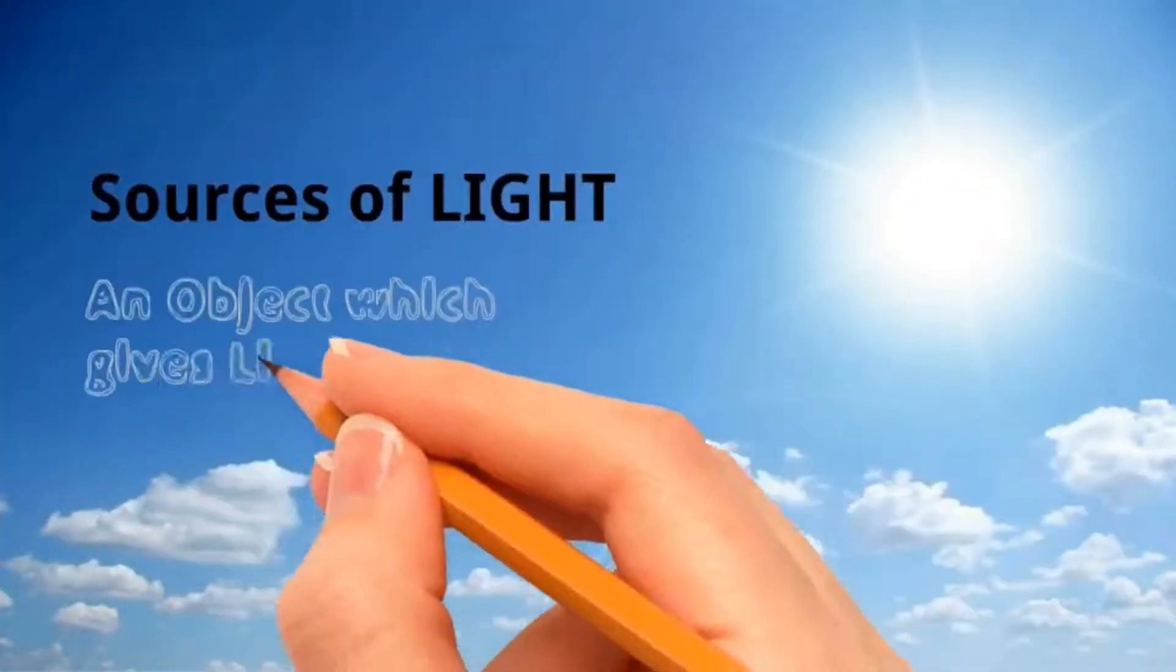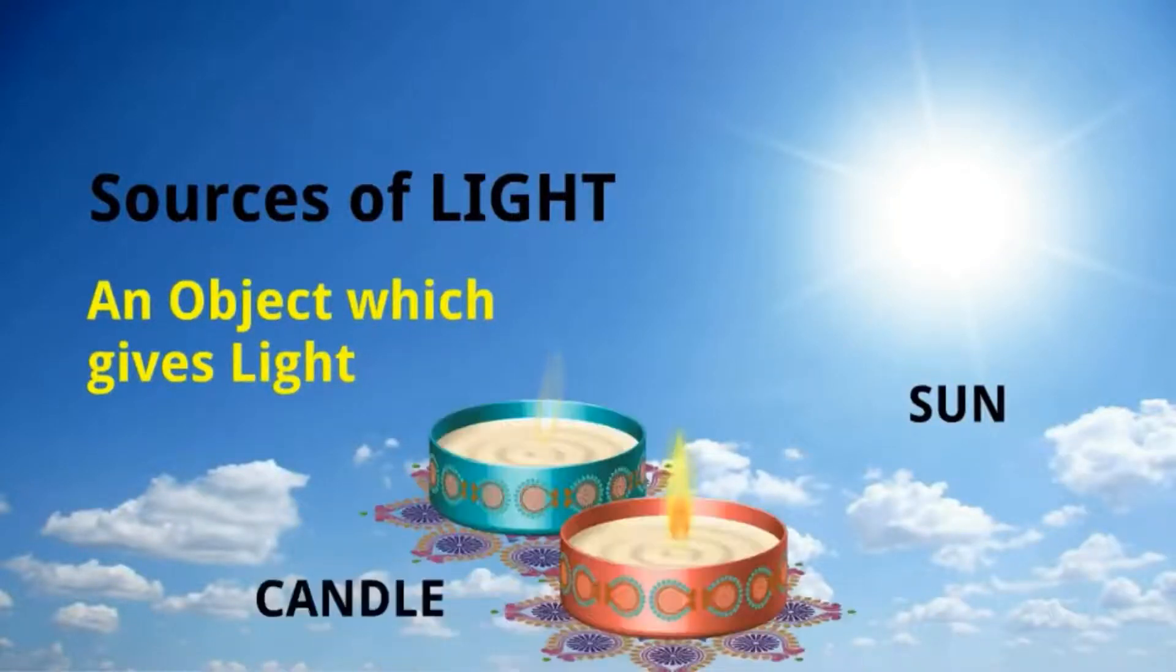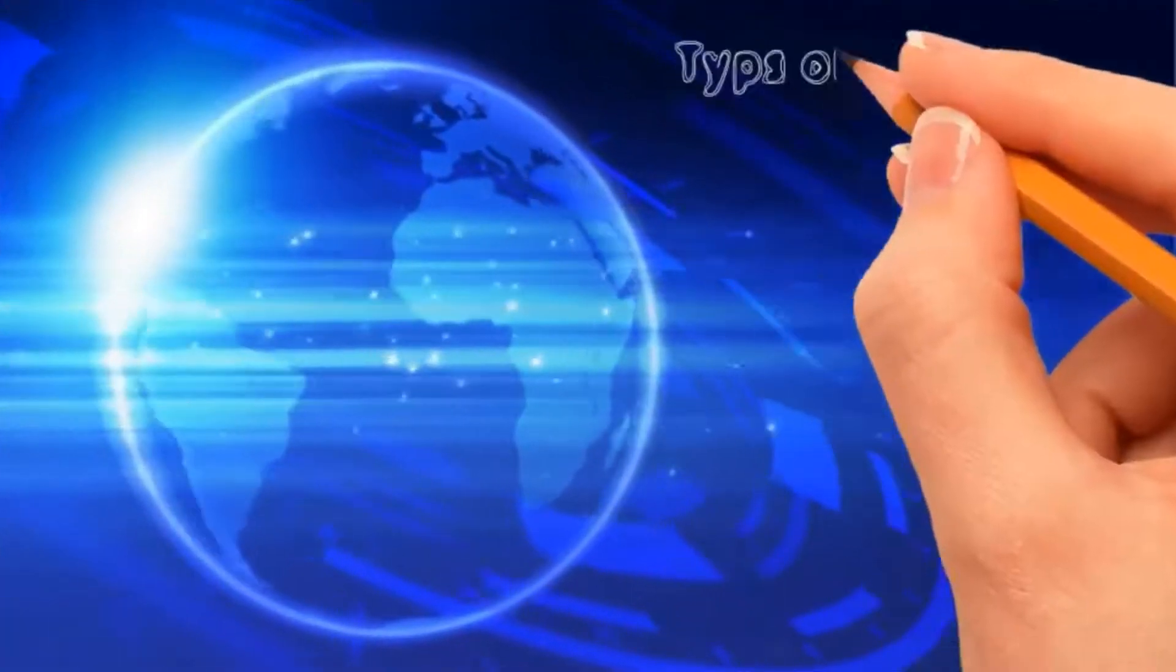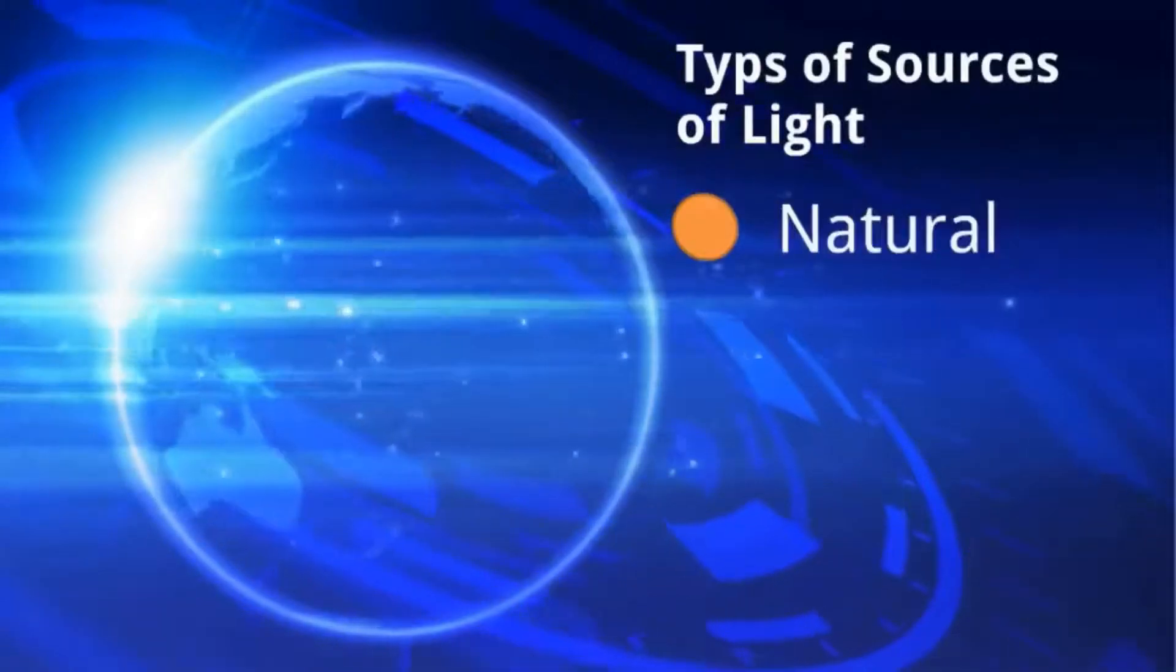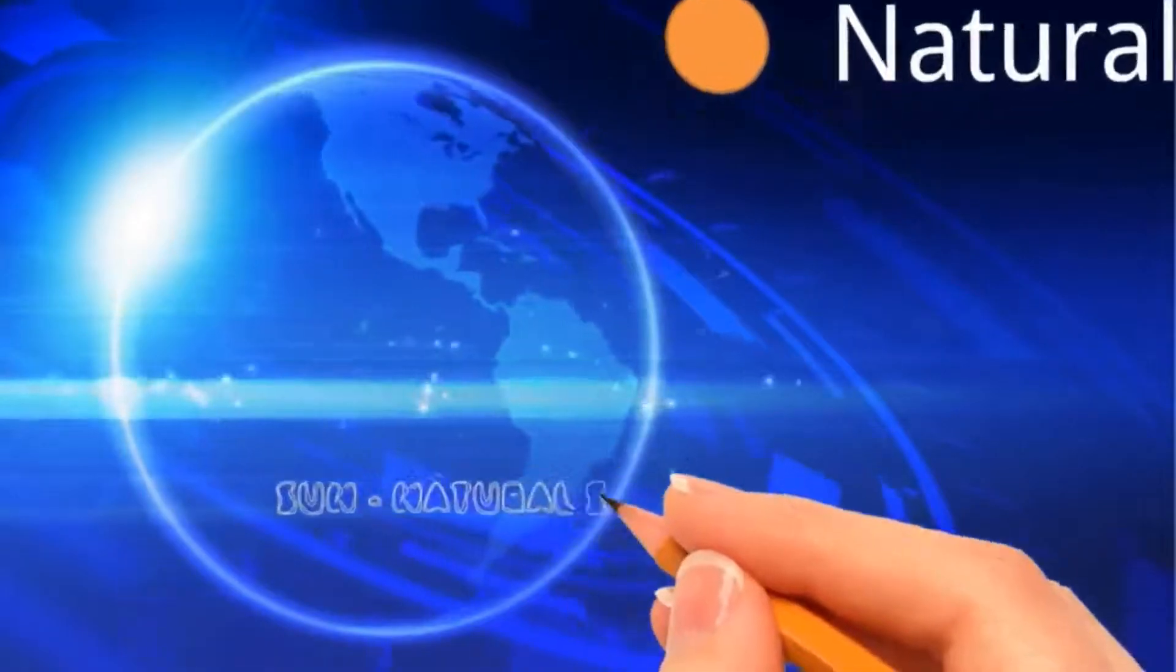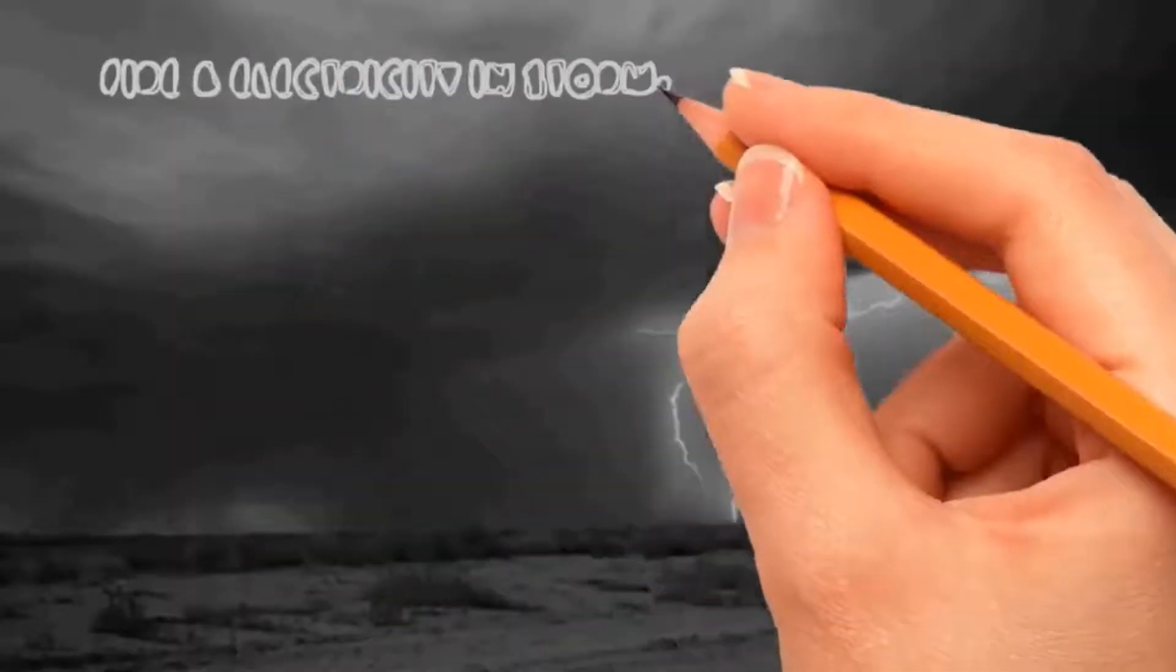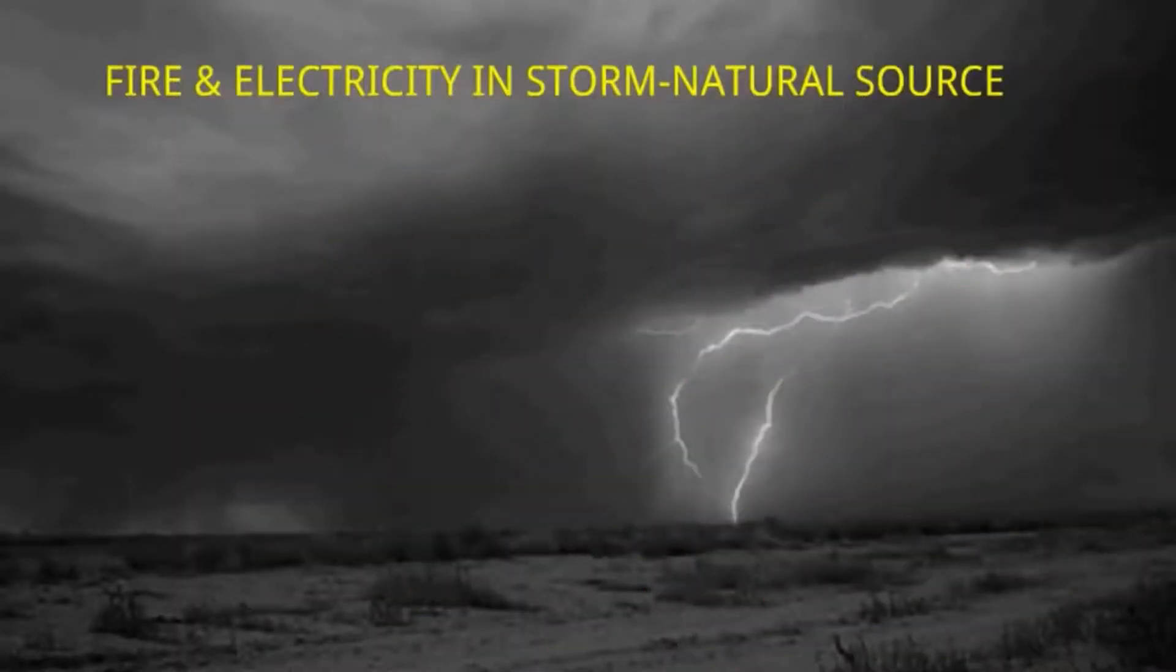Like the sun - it gives light so it's a source of light. A candle, if we burn the candle it will be a source of light. Types of sources of light: natural light and artificial light. Natural light means which is natural, which is not made by human beings, like the sun. Fire and electricity in storms is also natural light. Light in fireflies is also natural light.